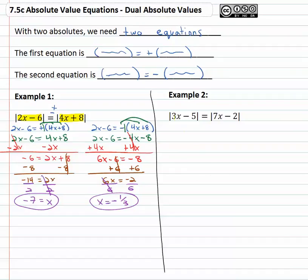Let's look at another example, here we have 3x minus 5 is equal to the absolute value of 7x minus 2. Again, those absolute values could have the same sign or opposite signs, so we'll put a plus or minus in front of the second part of the equation.